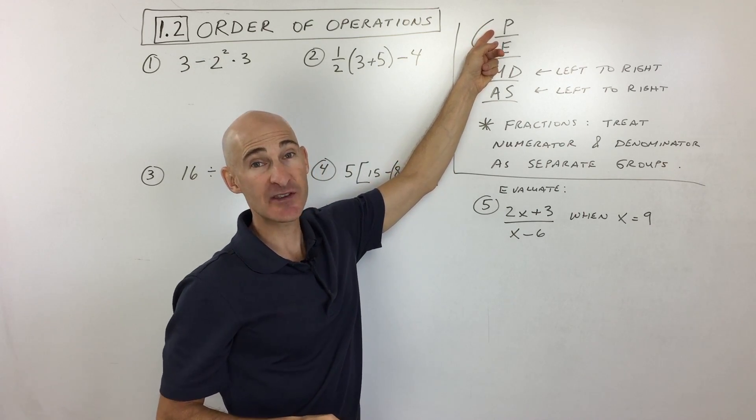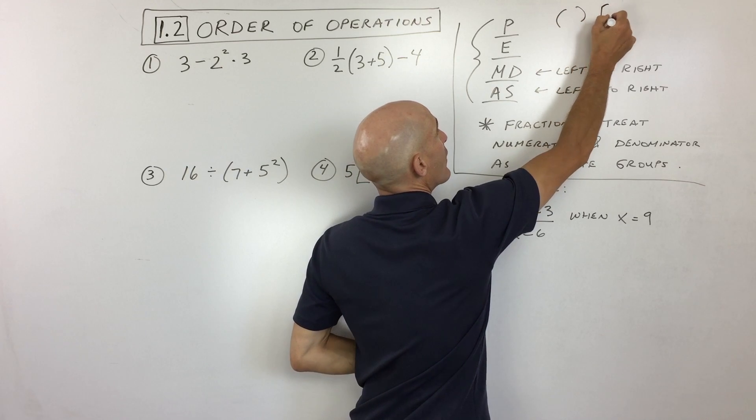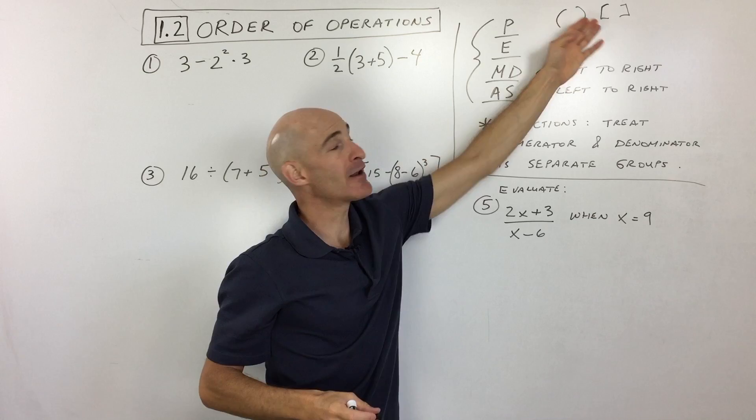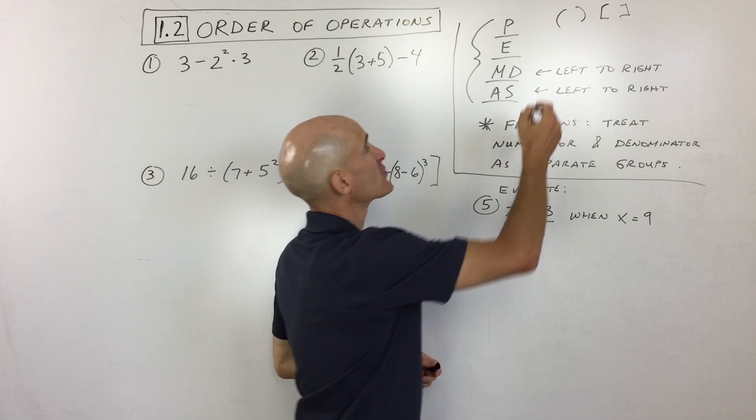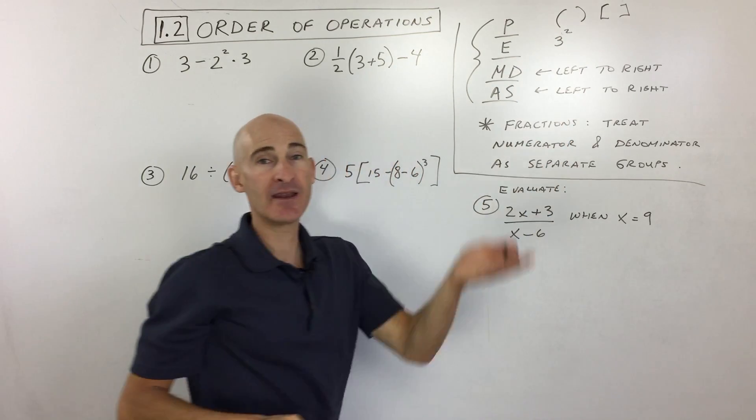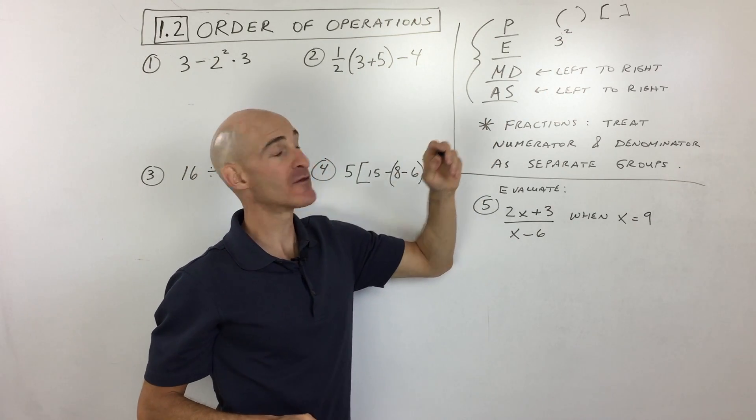The first level of importance is parentheses. Parentheses are represented like this or with brackets. You do whatever's inside those first. Then you go to E, that's for exponents. Exponents look like three squared, see that power, that number raised up there. That's an exponent. You do that second in order of importance.